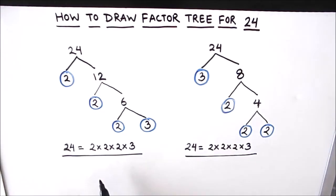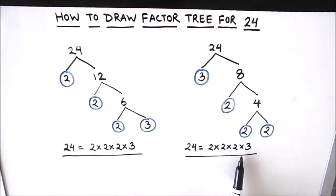The prime factors of 24 from this factor tree are 2 times 2 times 2 times 3 — the same result as the previous factor tree. That's the beauty of math: you can have different methods leading to the same answer. So this is how we draw a factor tree for any number. I hope this video is helpful. Please hit the like button and subscribe for more math videos. Thanks for watching.